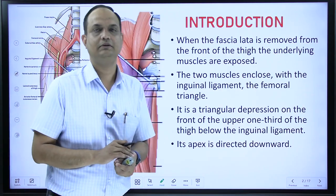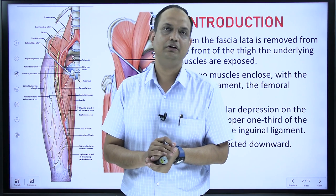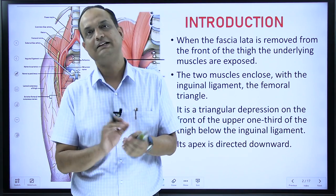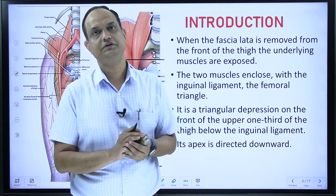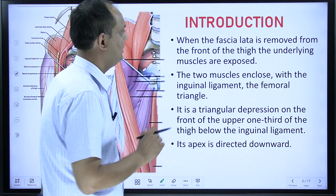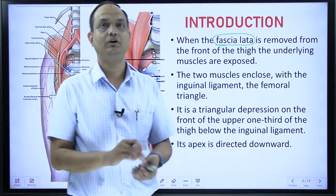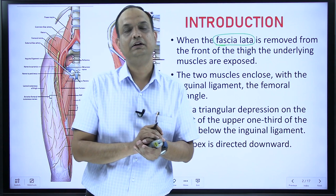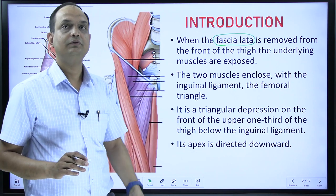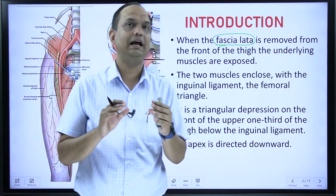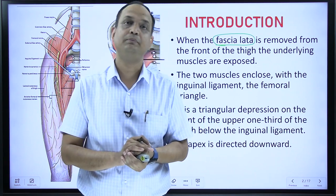When you see the femoral triangle in the dissection hall, you will have the cadaver and see the front of thigh. First you have to dissect the skin. Below the skin we have the superficial fascia, and deep to the superficial fascia you have the deep fascia. The deep fascia of the front of thigh is known as fascia lata.